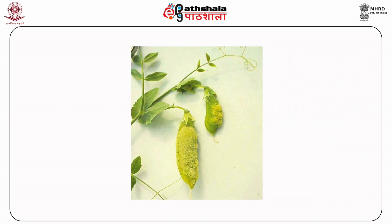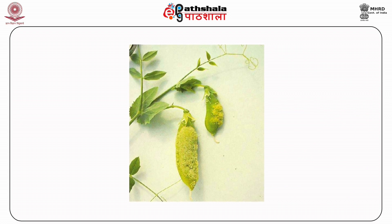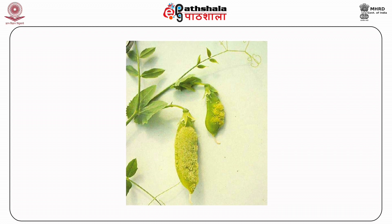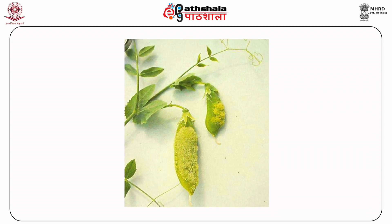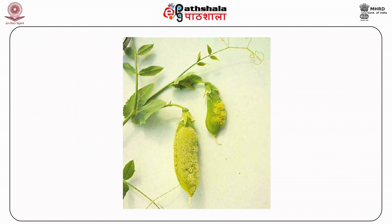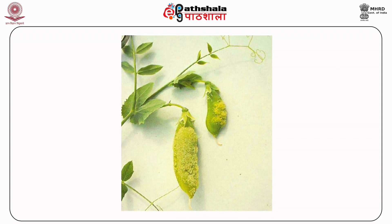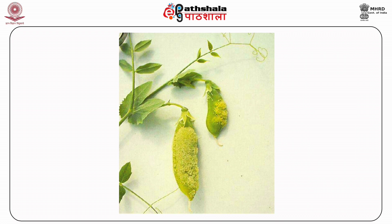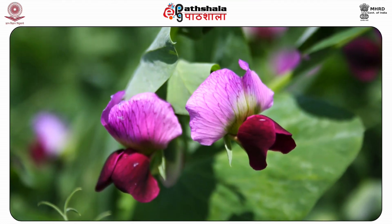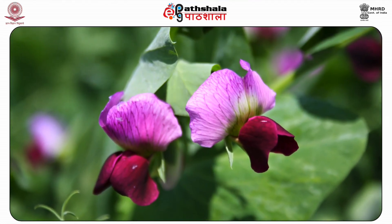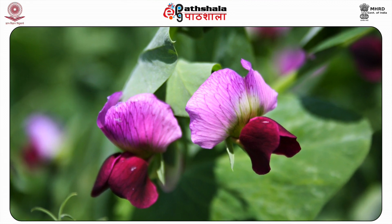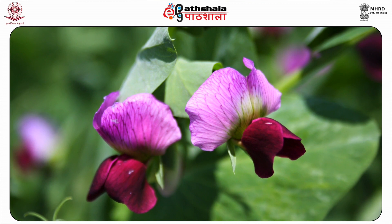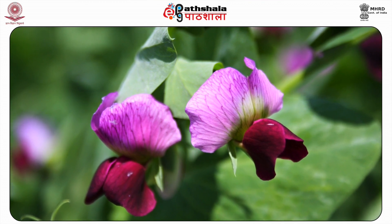Mendel selected the pea plant because of the following reasons: first, they are easy to grow; second, easy to get in large numbers; third, available in many varieties, and thus traits are easy to isolate; next, they reproduce sexually; and lastly, they have male and female sex cells called gametes.